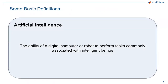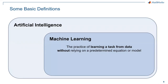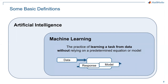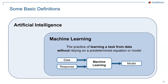Some basic definitions: artificial intelligence is a very broadly used term — essentially, the ability of a computer to perform tasks commonly associated with intelligent beings. This does not necessarily imply the computer is learning. Machine learning is when we use data without a predetermined model to come up with a model. In classical programming, we have data and a model to compute a response. With machine learning, we flip this around — we have data and a response, and we're trying to determine what the model is: given some inputs and desired outputs, we train a model to predict those outputs.